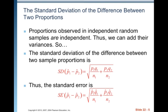The standard deviations of the difference between two proportions—proportions are observed and independent random samples are independent. Thus, we can add their variances, so our rules that we learned before apply. The standard deviation of the difference between two sample proportions is SD of P hat 1 minus P hat 2 equals the square root of P1 Q1 over N1 plus P2 Q2 over N2.